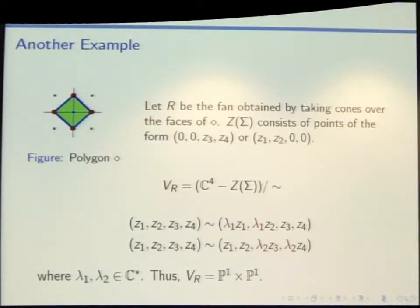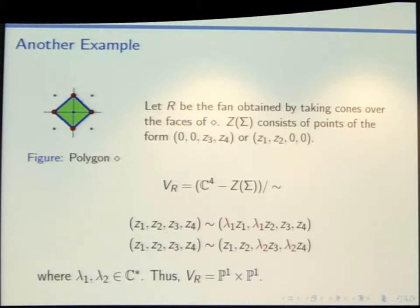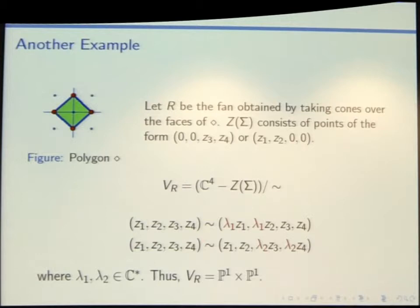Here's a slightly more complicated example: starting with this diamond and building the corresponding toric variety, you end up throwing away two different types of points — either points where the first two coordinates are zero, or points where the second two coordinates are zero. You're modding out by C-star squared, and the variety you get is P1 times P1. So this is a two-dimensional toric variety, but the coordinates are overkill — you have four coordinates to describe it.